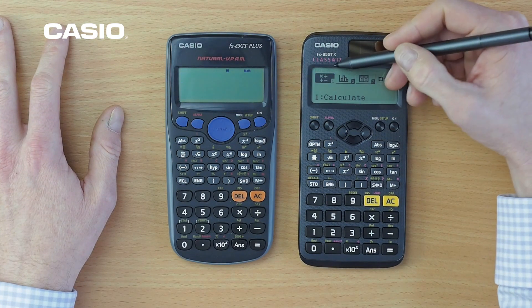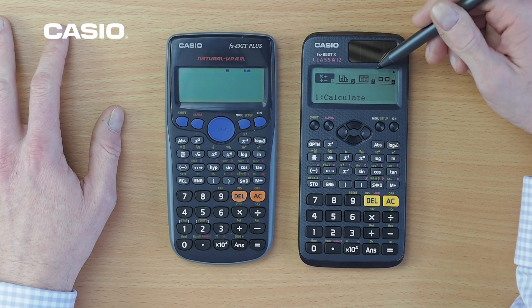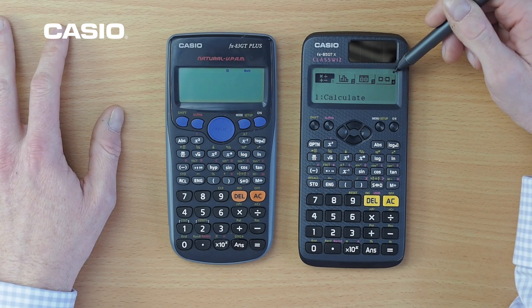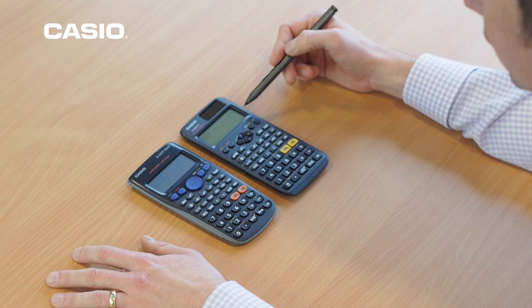So we press menu and we've got a calculate function, we've got a statistics function, a table function and we've got a new ratio function. Now some of these functions existed previously in the old calculator which went into the mode button, but they've been updated in the new version of the calculator to make them much easier to use.